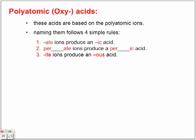Another simple rule, the I-T-E ion produces an O-U-S ending for the acid. Not the IC like the other one, but it's an O-U-S. Similar to the same type of endings that we use for the classic system. But we're using it now for naming these polyatomic acids, these oxy acids.